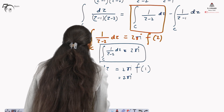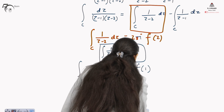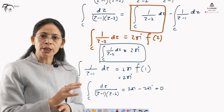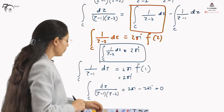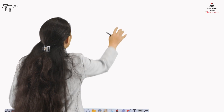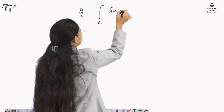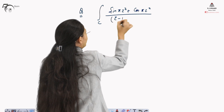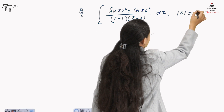Therefore, the integral over C of dz over (z minus 1)(z minus 2) equals 2πi minus 2πi = 0. This is consistent with Cauchy's Integral Theorem, since 1 over (z minus 1)(z minus 2) is analytic within and on the curve C when |z| = 1. Now let us change the integrand: let f(z) = sin(πz²) + cos(πz²), and evaluate the integral over C of [sin(πz²) + cos(πz²)] over (z minus 1)(z minus 2) dz, where |z| = 3.